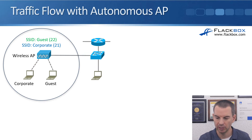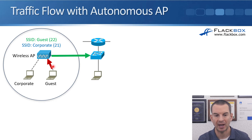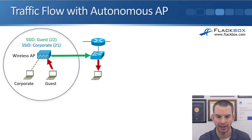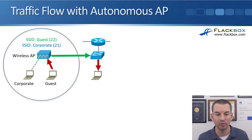Then let's say the laptop connected to the guest WLAN sends a frame to the wireless AP. The wireless AP knows it's coming in on the guest WLAN, which is associated with the guest VLAN. So it tags it with the guest VLAN and sends it on to the upstream switch, which forwards it as it would any other packet. So when using an autonomous AP, the AP tags the frames and sends them to the switch, and because there can be traffic for different VLANs, we need a trunk configured between the AP and the switch.